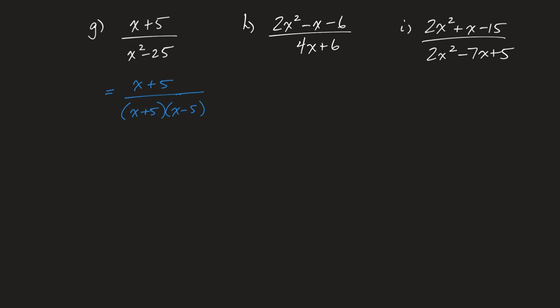I want you to notice that if we find the entire factor, even though it doesn't look like it's factored, we can always divide that out. So you're not going to see me factor out a one. We should be good to just say I have an x plus five on top and an x plus five on the bottom, and when I divide out those x plus fives I'm left with a one on top and my x minus five.